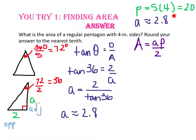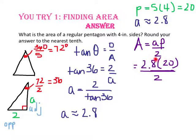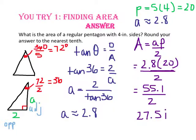Let's substitute 2.8 in our equation for the apothem and 20 for the perimeter. Remember, this number is rounded, so I'm going to leave what I got when I put 2 divided by tangent 36 on the calculator and just hit times 20. That will give me approximately 55.1. Divide that by 2 and we'll get an area of approximately 27.5 inches squared. If you round and put 2.8 times 20 in the calculator, your answer will come out to about 28 inches — close, but not exactly the same, so be careful.